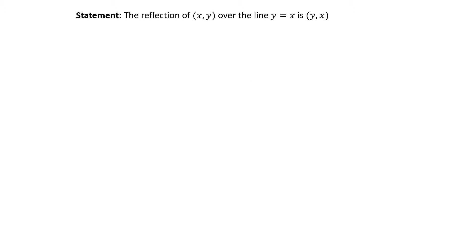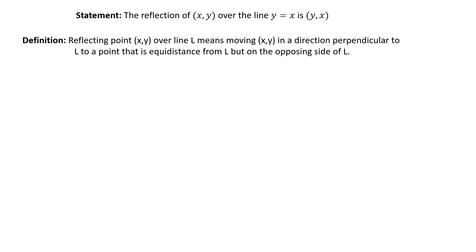The statement we're going to be proving today is this: the reflection of xy over the line y equals x. Reflecting point xy over line L means moving xy in a direction perpendicular to L to a point that is equidistant from L but on the opposing side of L.